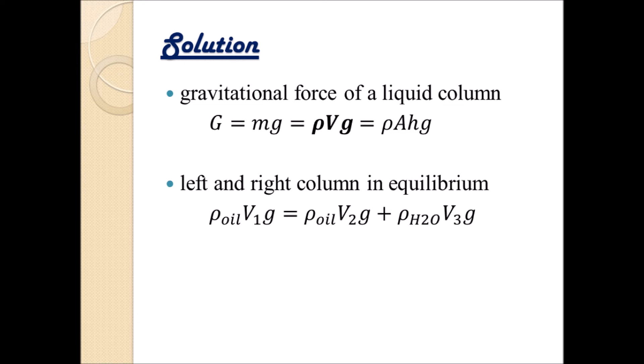And this is really nice because, first of all, we can divide the whole equation by g. We do not need the gravitational constant at all. And then we can put the density of oil that we are looking for on the left-hand side and everything else on the right-hand side. And we get that the density of rho oil equals density of water multiplied with the volume of the water V3, all of it divided by V1 minus V2.